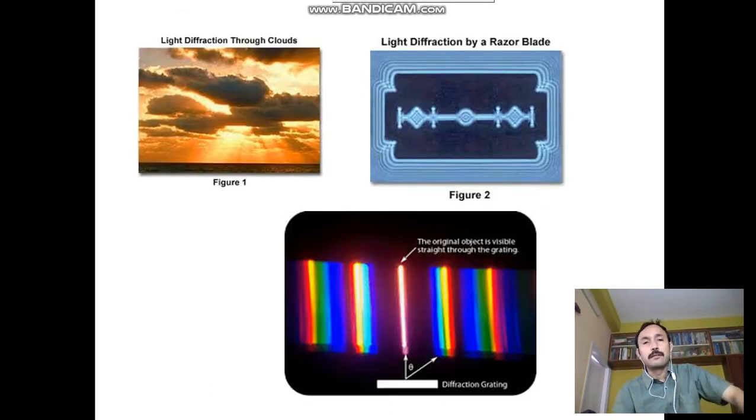So these are the pictures. When sunlight is passing through the clouds, you can see the golden yellow color that is shown in figure 1. This is due to the diffraction of light.